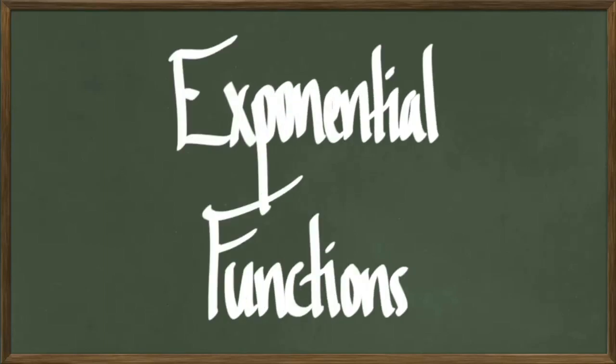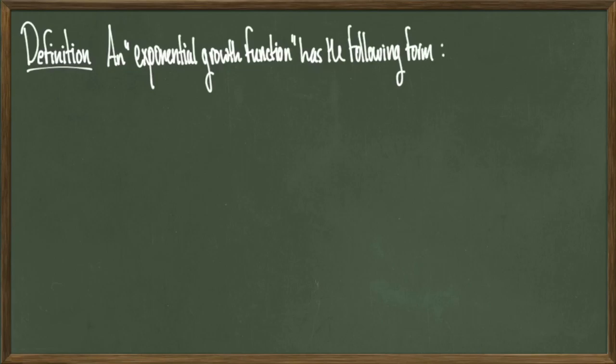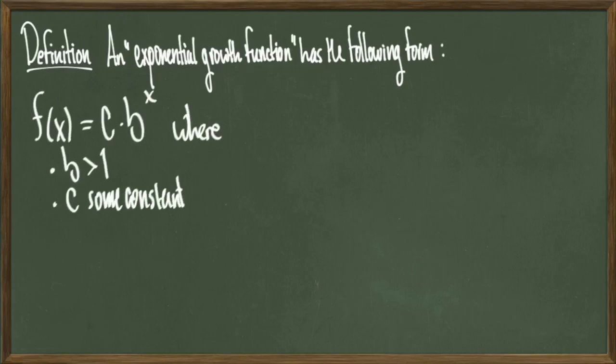Hey everyone, today we're going to be talking about exponential functions. To begin, we'll start off with a basic definition. An exponential growth function has the following form: f(x) = c·b^x, where b is some positive number greater than 1 and c is some constant.